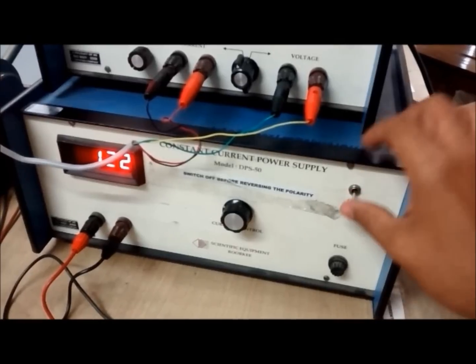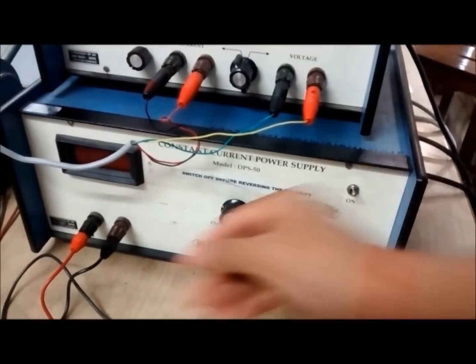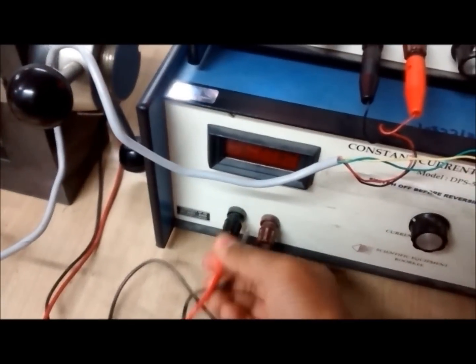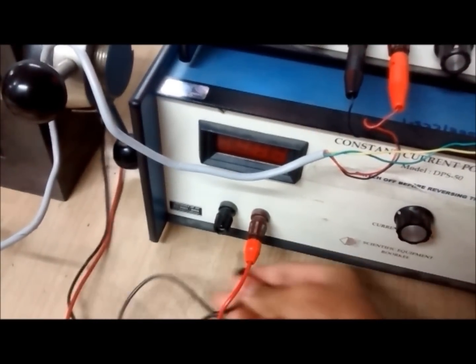Now change the polarity of the constant current power supply so as to change the direction of the magnetic field between poles and repeat the previous processes again.